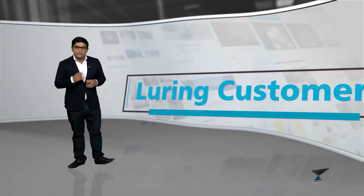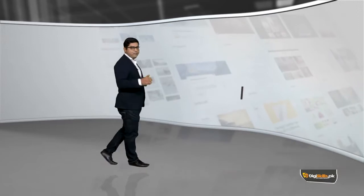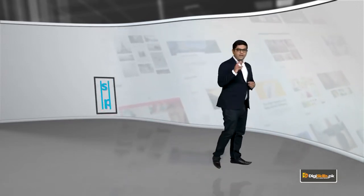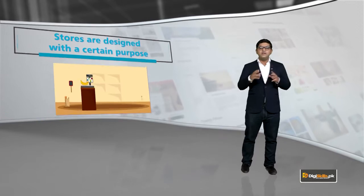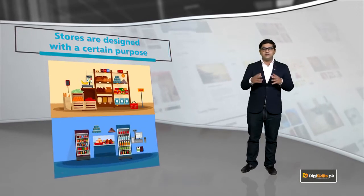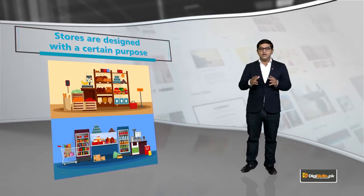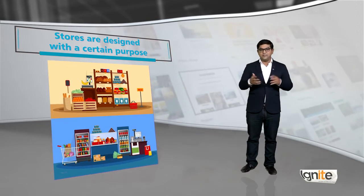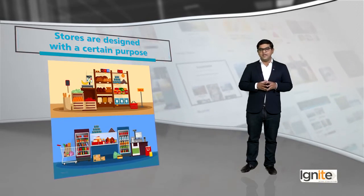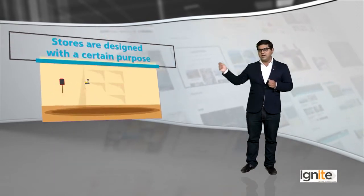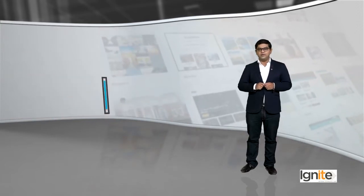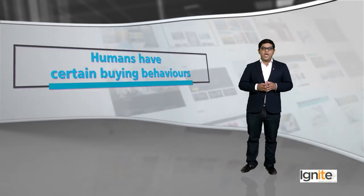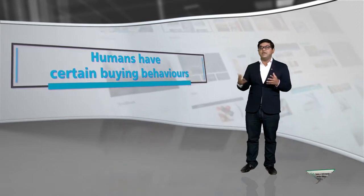I will try to give you a few examples of this. Jab bhi aap dukaan pe jate hain, jab bhi aap market pe jate hain, aapko pata hain that stores are designed with a certain purpose. Aapko nazar aayega ke toffees jo hain, woh hamesha counter pe padi hoti hain. Biscuits jo hain, woh hamesha ek side drawer pe padi hoti hain. Because humans have certain buying behaviors.